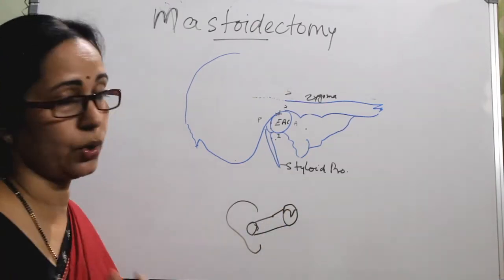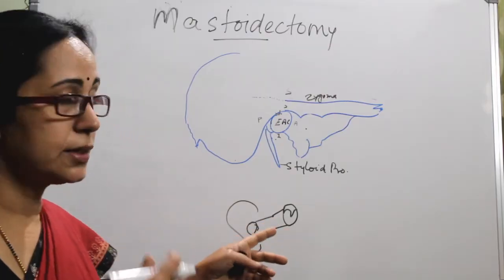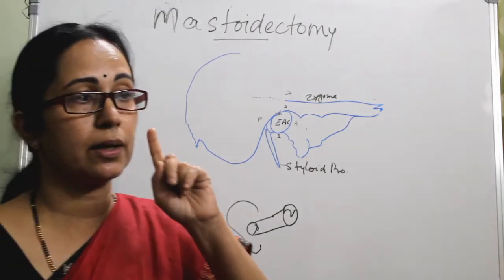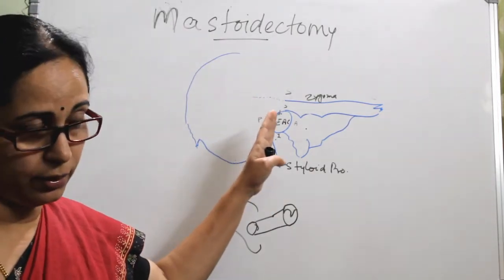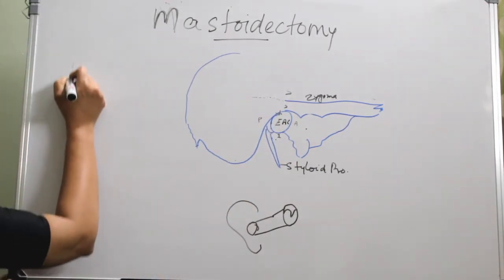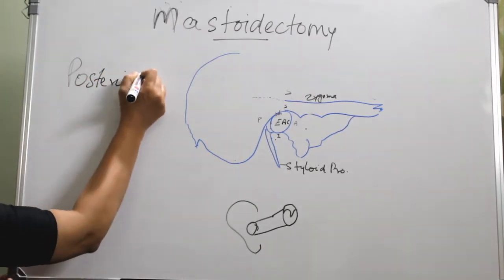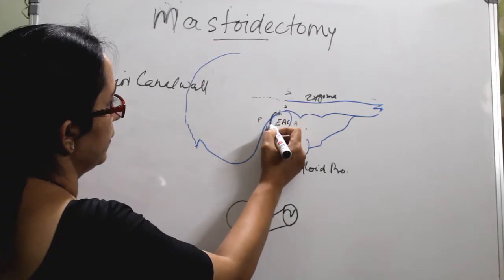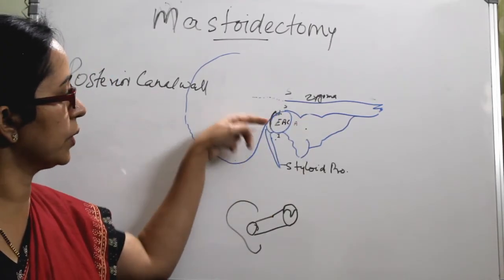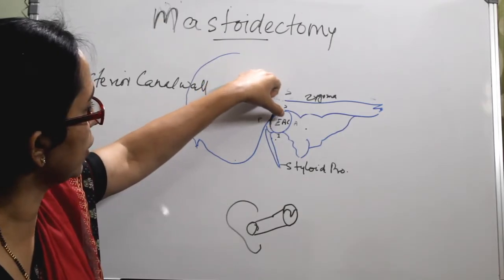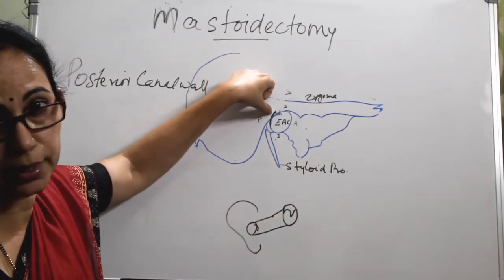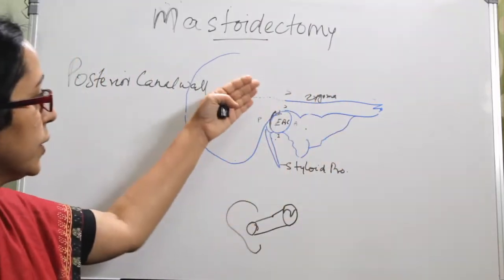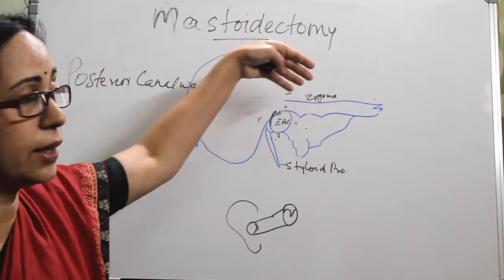Anatomy of all these areas was already explained in earlier classes. Medial to the tympanic membrane comes the middle ear. This middle ear and mastoid share a common boundary — the posterior canal wall. One terminology you should be familiar with is the posterior canal wall. The posterior canal wall is a common boundary, especially the posterior superior canal wall. The mastoid and the external auditory canal and also the middle ear share the posterior canal wall.